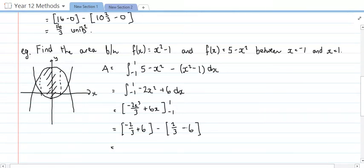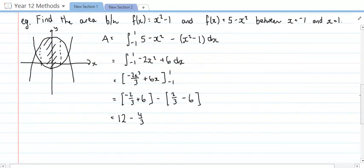I'm just going to collect the terms here, so 6 take away negative 6 is 12. And negative 2 thirds minus 2 thirds is negative 4 thirds. So I've got 12 minus 4 thirds, which is really just 10 and 2 thirds. So that's going to be 32 on 3. And again, that's an area, so it's measured in square units.